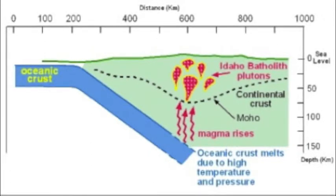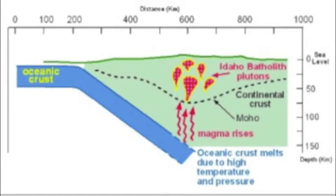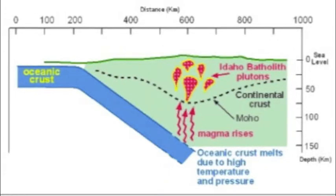The Atlanta Lobe is older and ranges in age from 100 to 75 million years old. The Bitter Root Lobe is approximately 85 to 65 million years old.